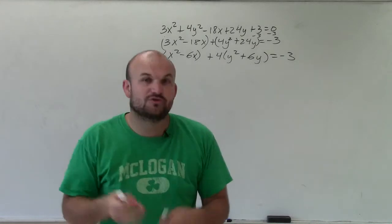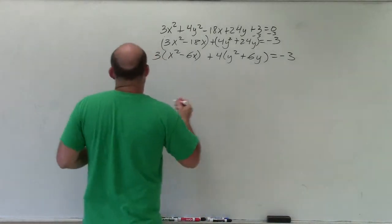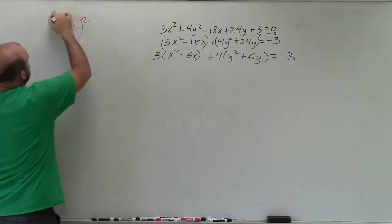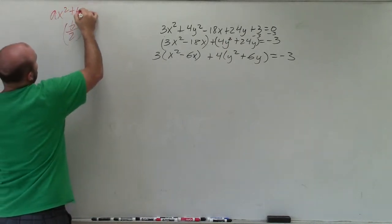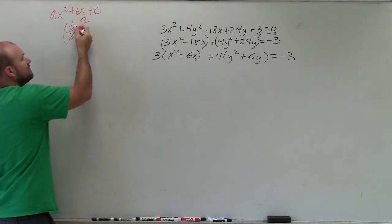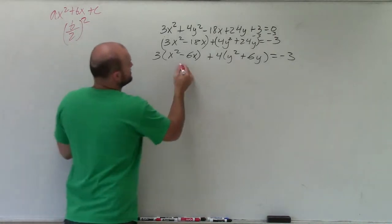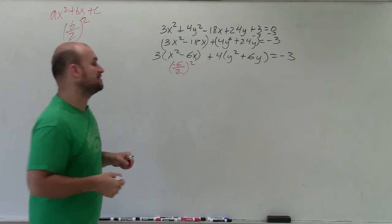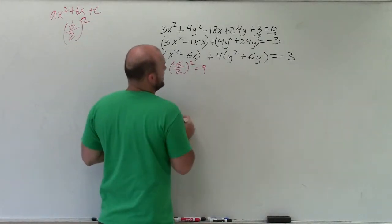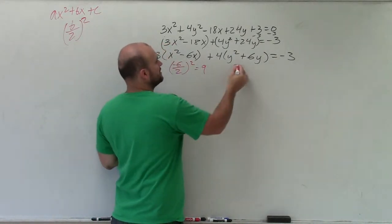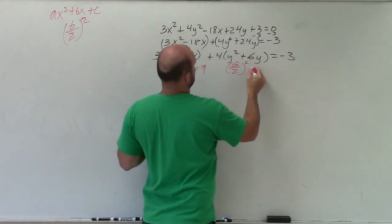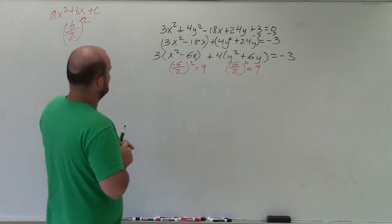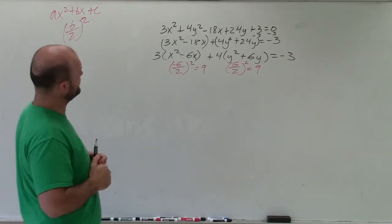So now, to create the perfect square trinomial, I need to take b divided by 2 and square it. And remember, b comes from ax squared plus bx plus c. That is the standard form of a quadratic, where b is the coefficient of your linear term. So I'm just going to take negative 6 divided by 2 squared. Negative 6 divided by 2 is negative 3. Negative 3 squared is equal to a positive 9. Here I have 6 divided by 2 is 3. And I get 3 squared is equal to 9. Cool. I actually have the exact same ones. That's going to be kind of interesting. I don't think I've actually ever had a problem like this. I like this problem.